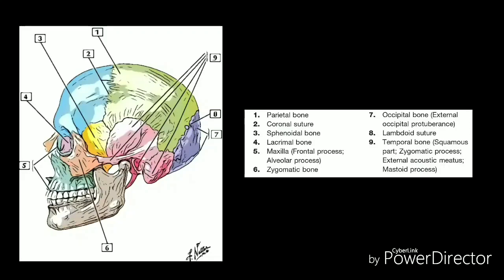The zygomatic temporal suture separates the zygomatic bone and zygomatic process of the temporal bone. The two large parietal bones are connected and make up part of the roof and sides of the human skull. The two bones articulate to form the sagittal suture. In the front, the parietal bones form the coronal suture with the frontal bone, and in the rear, the lambdoid suture is formed by the occipital bone. Finally, the squamosal suture separates the parietal and temporal bones.